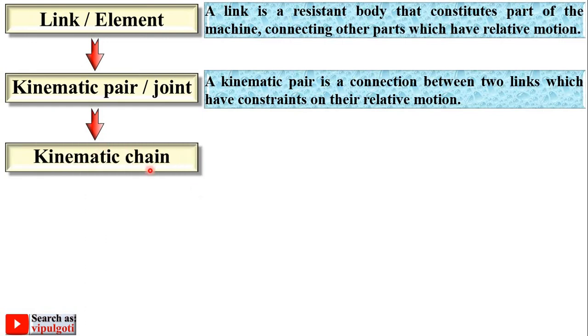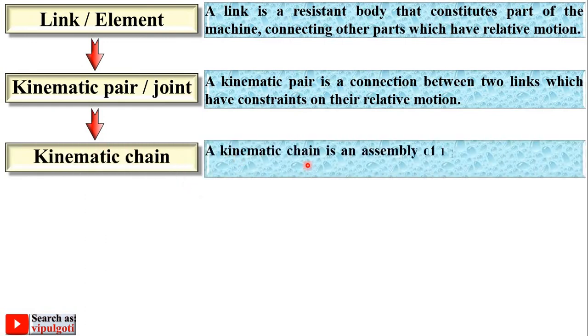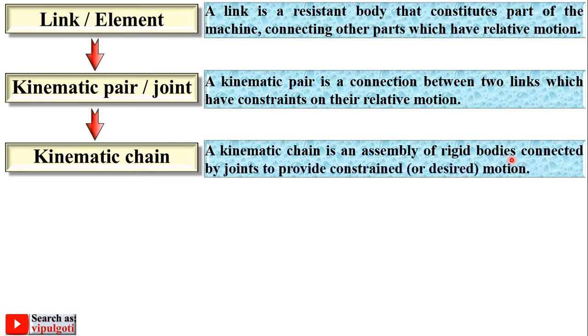Next, kinematic chain. A kinematic chain is an assembly of rigid bodies connected by joints to provide constrained or desired motion. Here you can see different links joined together. It is called the assembly of rigid bodies, or you can say assembly of links connected by joints. Here there are four bars, so you can see it is a four-bar chain.